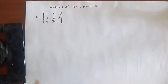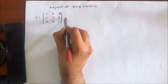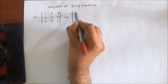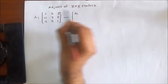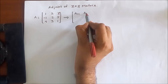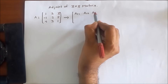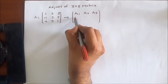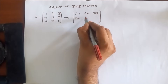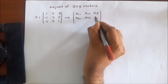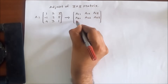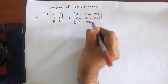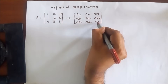Now we have to find out the adjoint of this matrix. This matrix can be represented with elements A11, A12, A13, A21, A22, A23, A31, A32, A33.